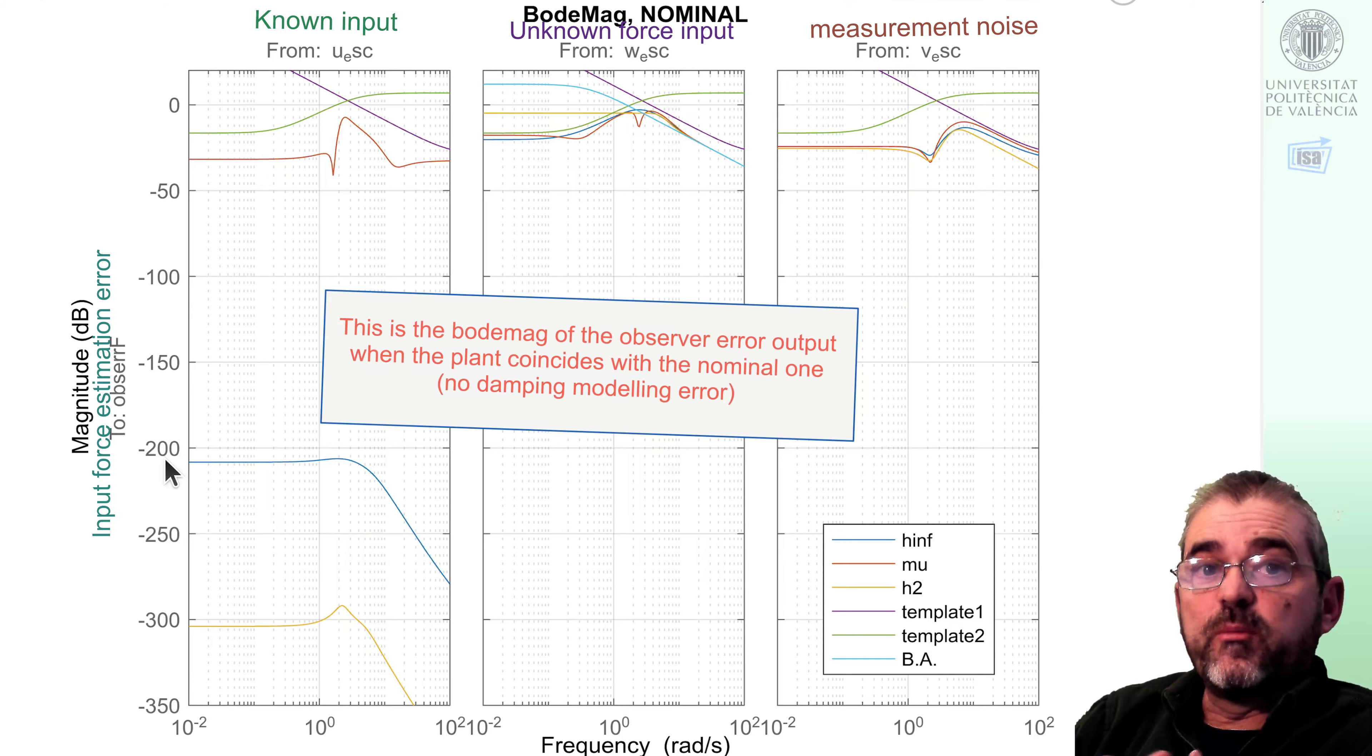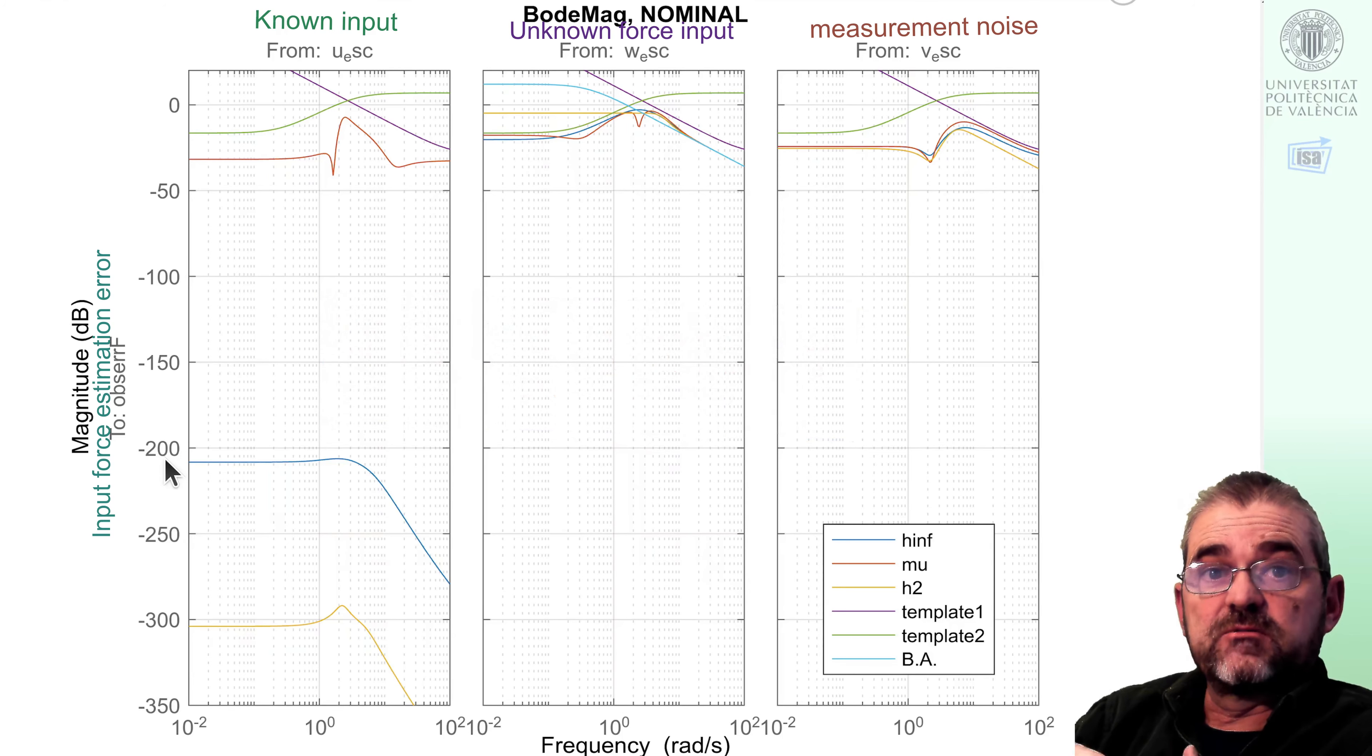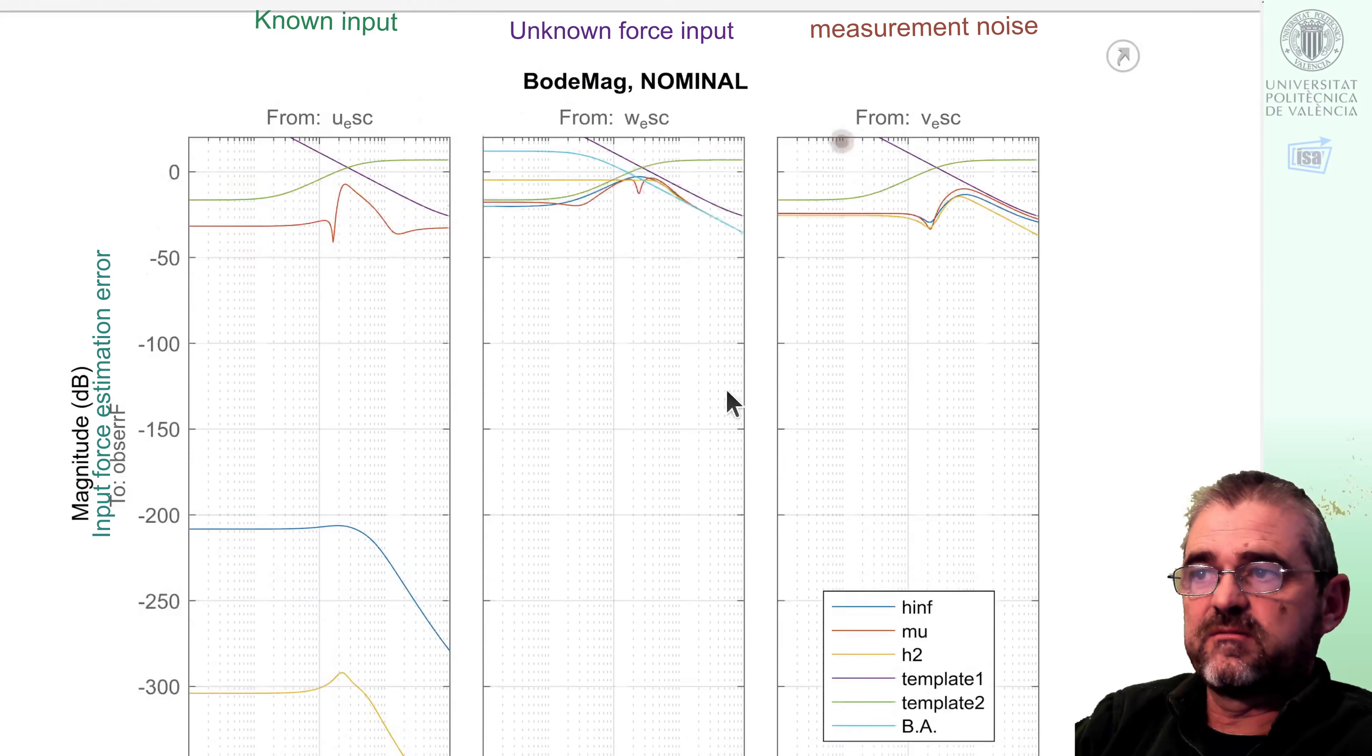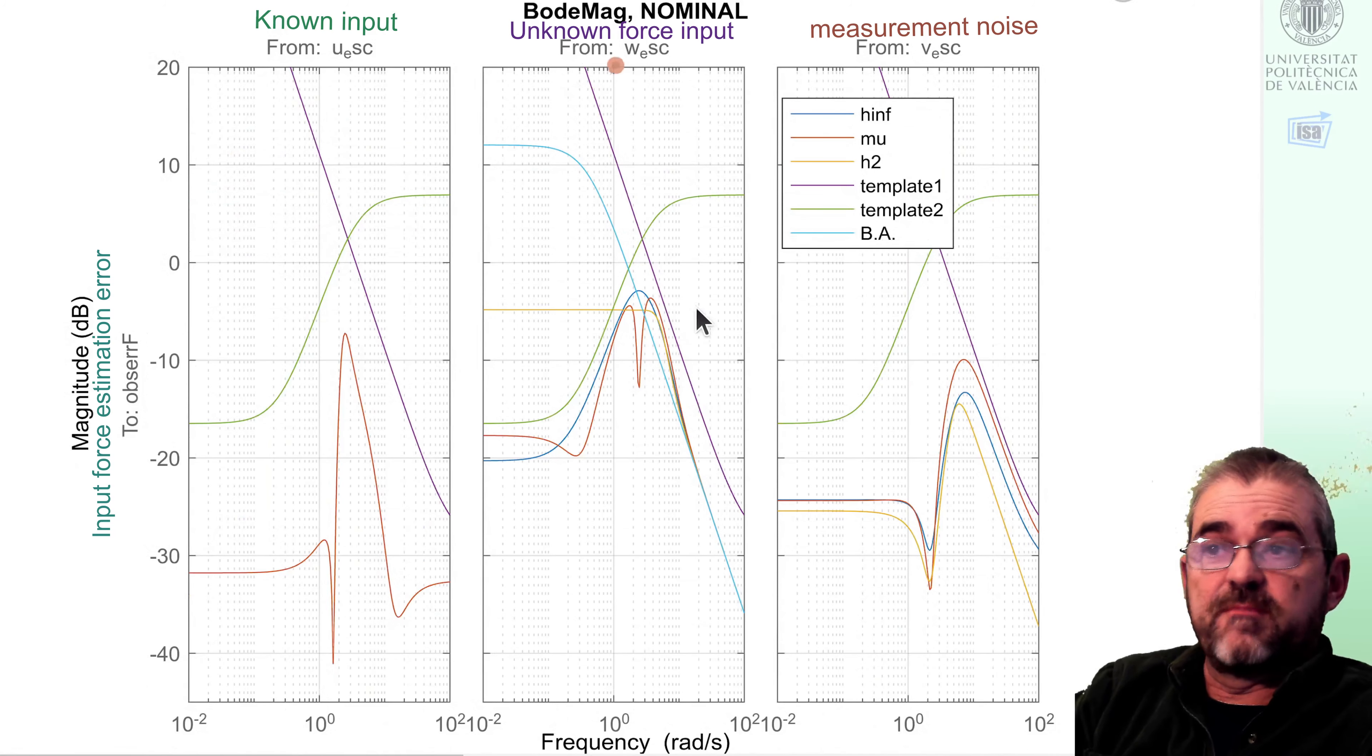Minus 200 decibels is just plain zero. Indeed we know that nominally observers do cancel out the effect of known inputs in the estimation error. However, that cancellation will not be perfect once we are confronted with modeling error. So as mu synthesis knows it, it's the red line in here, then it will aim to minimize the worst case error without paying too much attention to the nominal performance. So there is kind of a crosstalk between the effect of the known and unknown inputs, but that's unavoidable with modeling errors, so the yellow and blue lines are an idealistic nominal case.